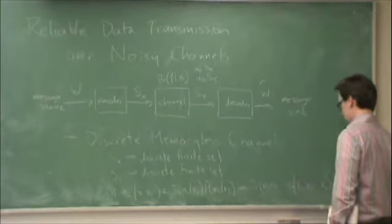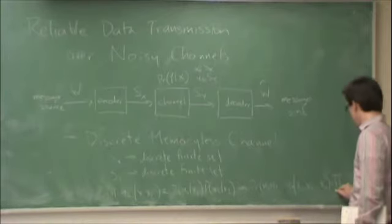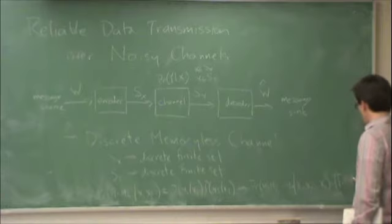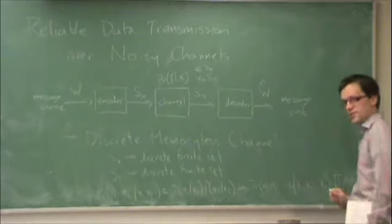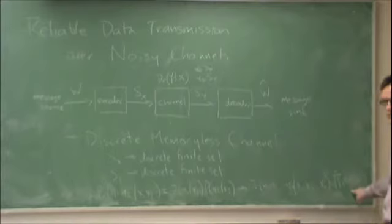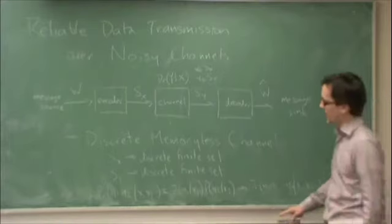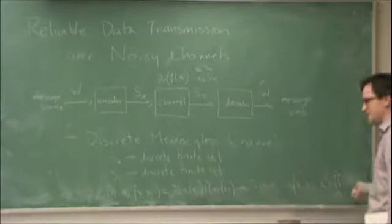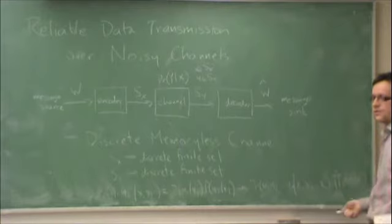should equal the product from i equals 1 to n of probability yi given xi. So in other words, what this statement is telling us is that the channel uses— so each time I use the channel, the distortion is statistically independent. That's why it's factoring into these independent terms over here.